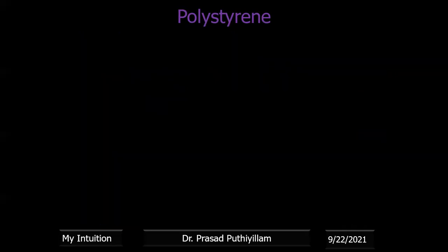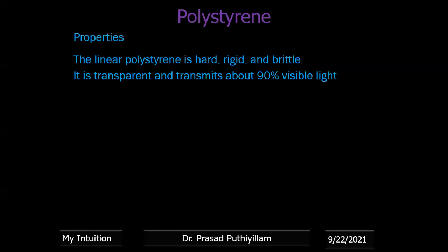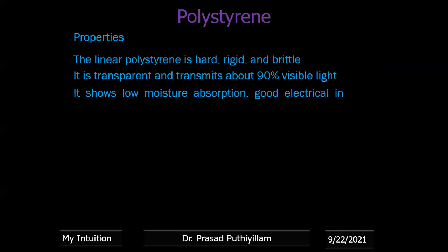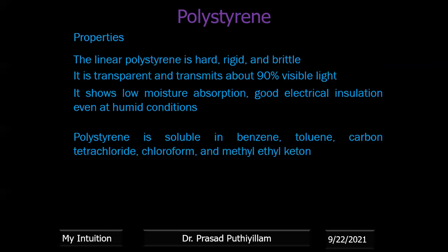The properties of linear polystyrene: it is hard, rigid, and brittle. It is transparent and transmits about 90% of visible light. It has very low moisture absorption and good electrical insulation even in humid conditions. It is soluble in benzene, toluene, carbon tetrachloride, chloroform, and methyl ethyl ketone. It is unaffected by acids and alkalis.